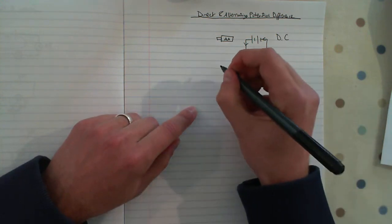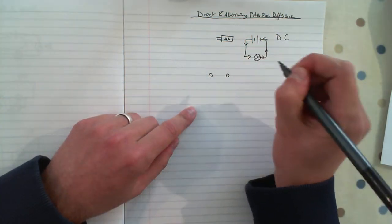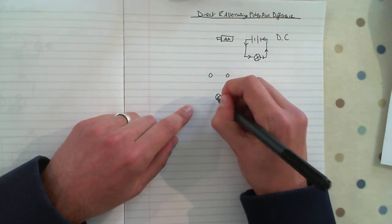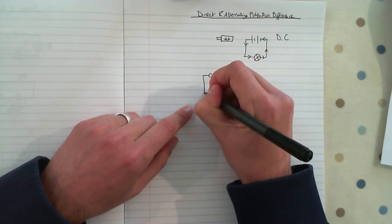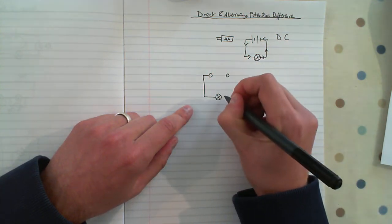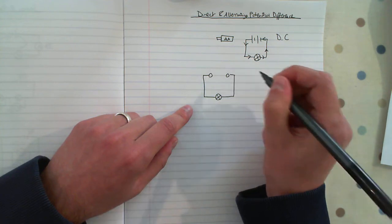Alternating potential difference comes from mains supply. So let's draw a circuit - mains supply, power unit, filament bulb, back to the mains supply.